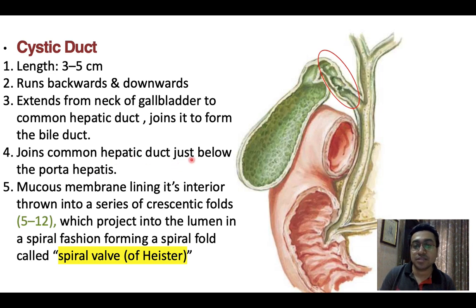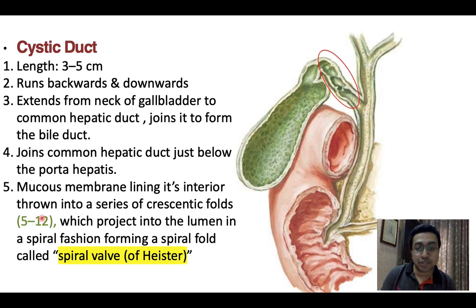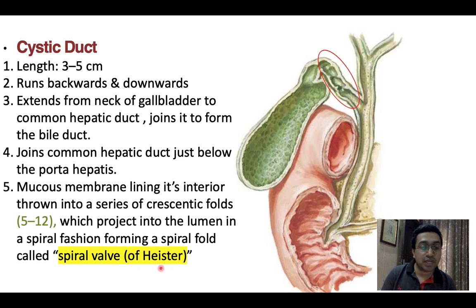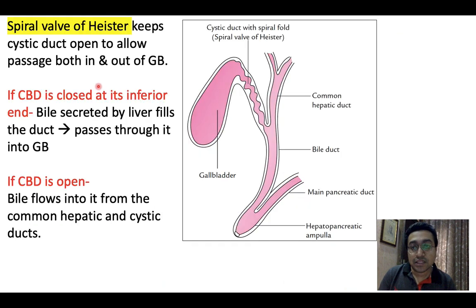The mucous membrane lining its interior is thrown into a series of crescentric folds, which are 5 to 12 in number. These project into the lumen in a spiral fashion, forming a spiral fold called the spiral valve of Heister. This is a very important question asked in exams. The spiral valve of Heister keeps the cystic duct open to allow passage both in and out of the gallbladder.